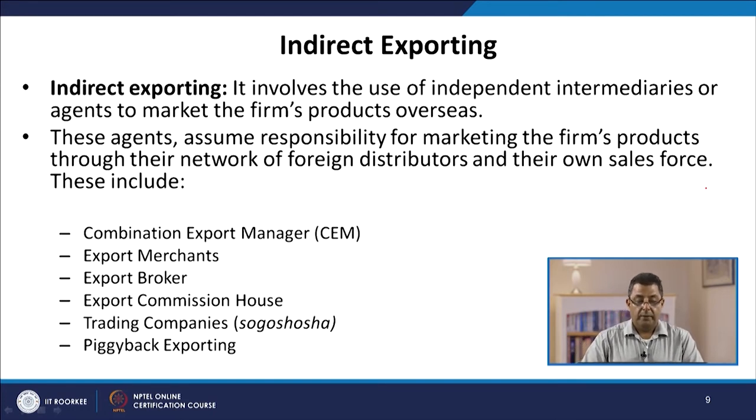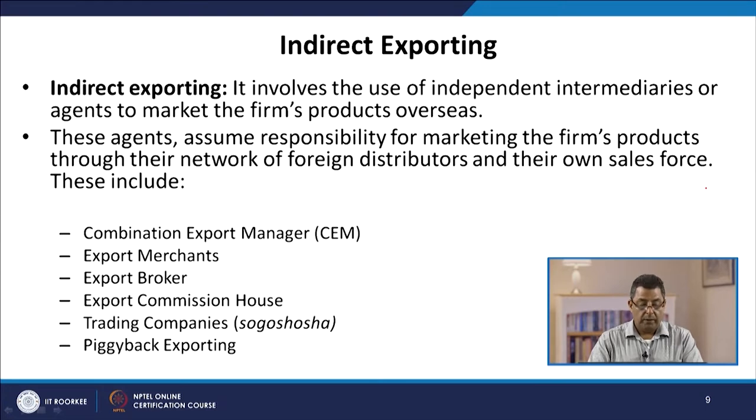In indirect exporting — the least risky option — an independent intermediary or agent is used to market the firm's product overseas. These agents assume responsibility for marketing the firm's product through their network of foreign distributors and their own sales force. The company sells to an independent intermediary who then handles the rest. This may include a combination export manager, export merchants, export brokers, export commission houses, trading companies, and piggyback exporting.